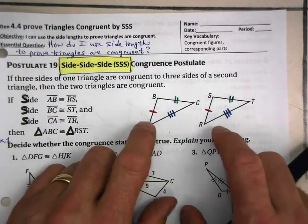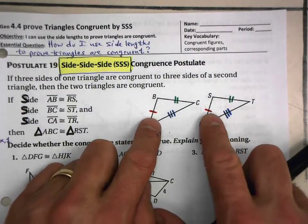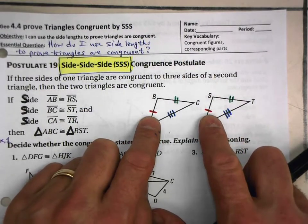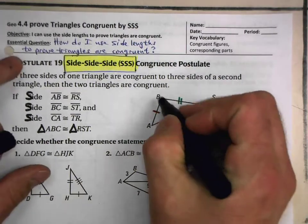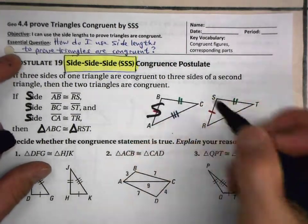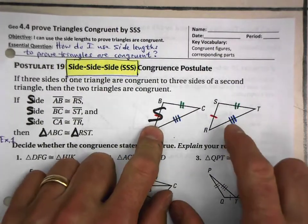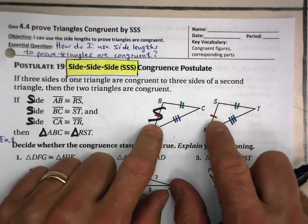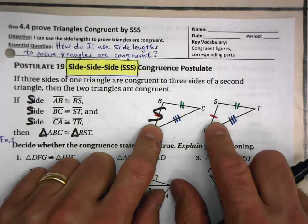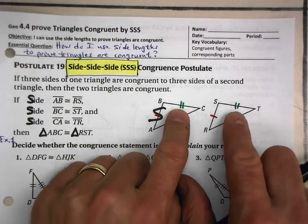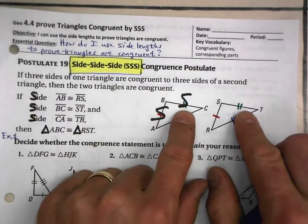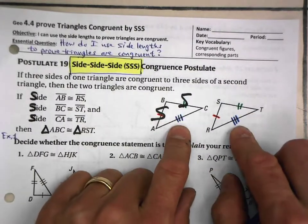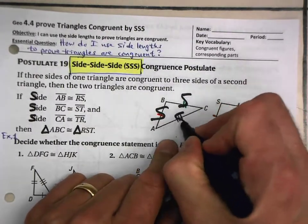So the way you think of that is you look for one pair of sides that are congruent, and let's do this. Let's label just one of the triangles. So let's put big old fat S on there, because I have one pair of sides that are congruent. I have a second pair of sides that are congruent, there we go, and I have a third pair of sides that are congruent.